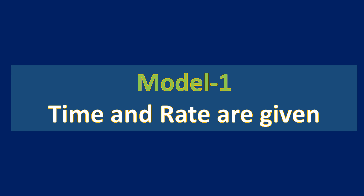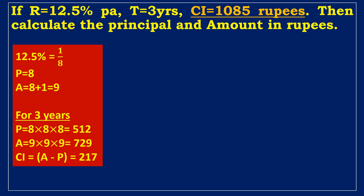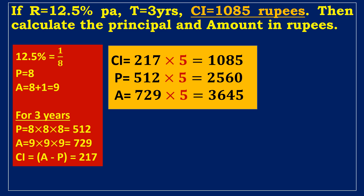Model 1: Time and rate are given. If the rate of interest equals 12.5% per annum, time equals three years, and CI equals 1085 rupees, calculate the principal and amount. Given: 12.5% = 1/8, so the principal is 8 and the amount is 9. For three years, principal = 8³ = 512 and amount = 9³ = 729. CI = 729 − 512 = 217. Since 217 × 5 = 1085, the multiplier is 5. Required principal = 5 × 512 = 2560 rupees, and required amount = 5 × 729 = 3645 rupees.